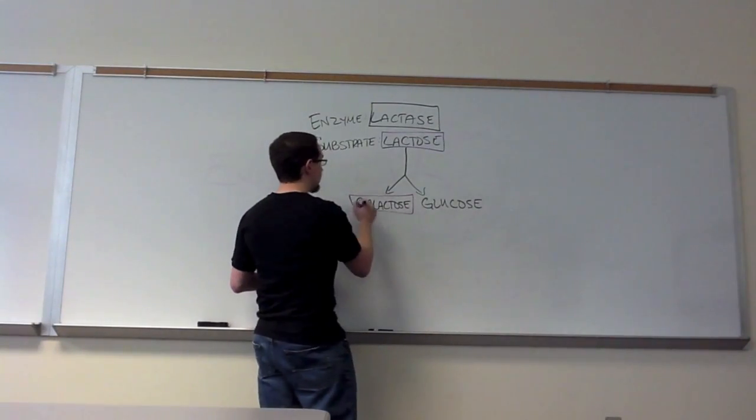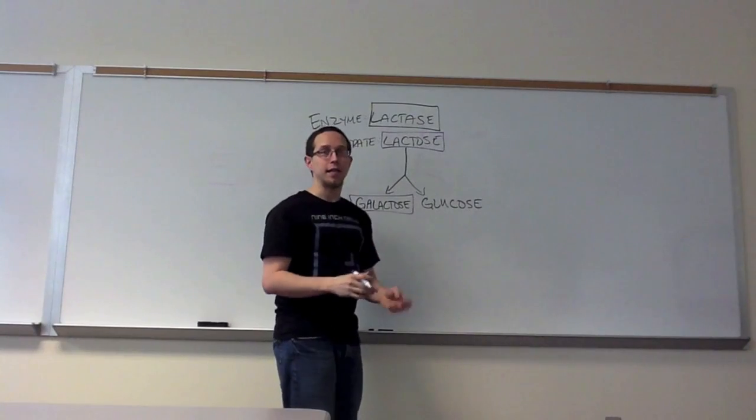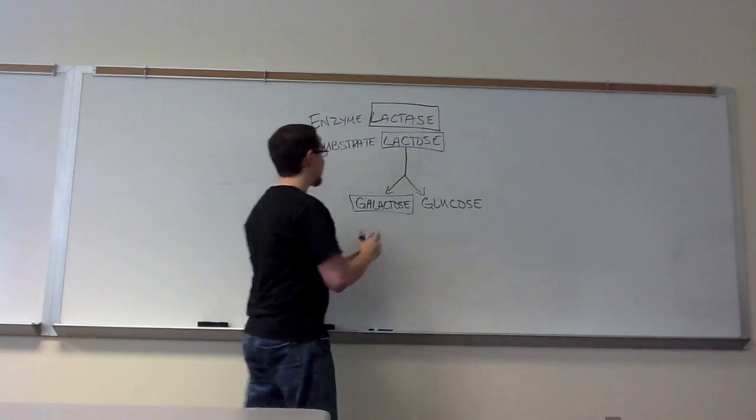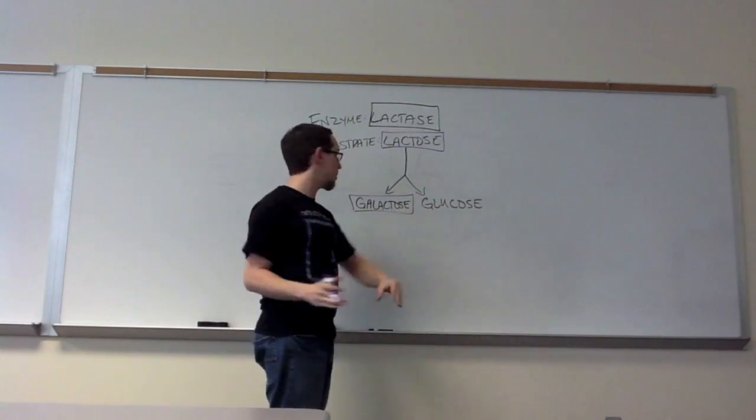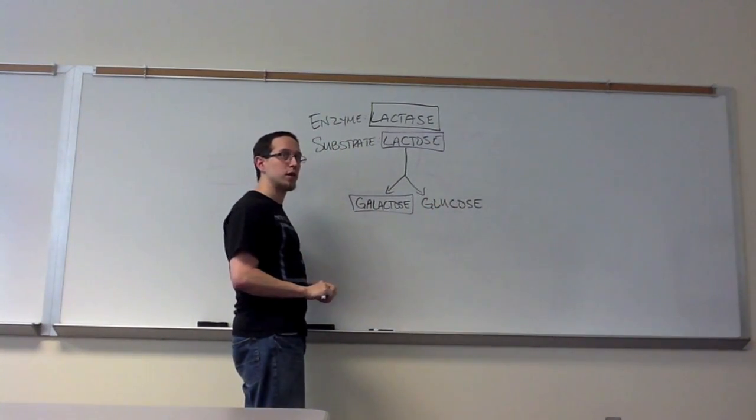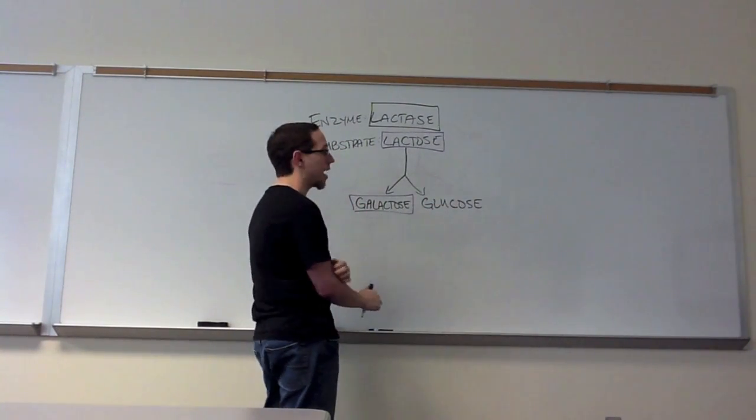Same thing with galactose. We could measure the amount of galactose at the beginning. Ideally, it would be zero, and then we could measure the amount of galactose at the end, and that would tell us over a certain period of time how much galactose was produced. But again, we haven't done anything with galactose before.